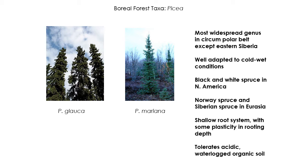In North America, our most common species are Picea glauca, which is white spruce, and Picea mariana, which is black spruce. In Eurasia, we've got Norway spruce and Siberian spruce and some other species as well.